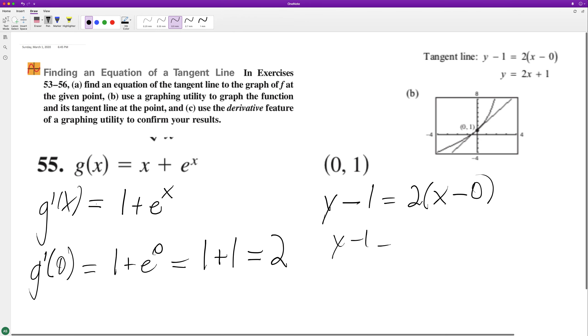So y minus 1 equals 2x. Add 1 to both sides, and we get y equals 2x plus 1.